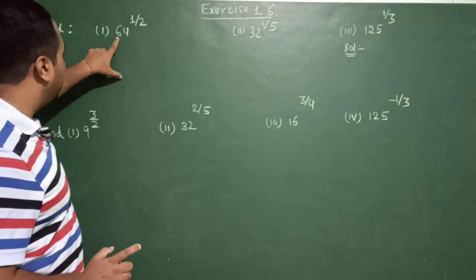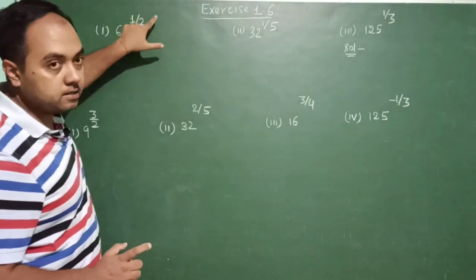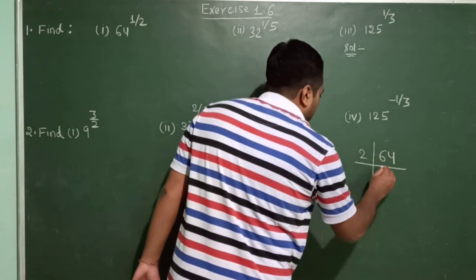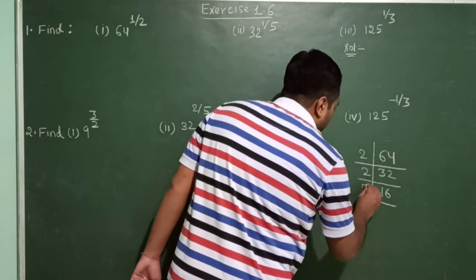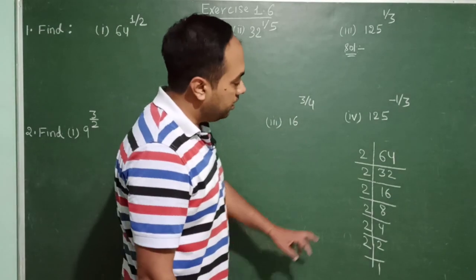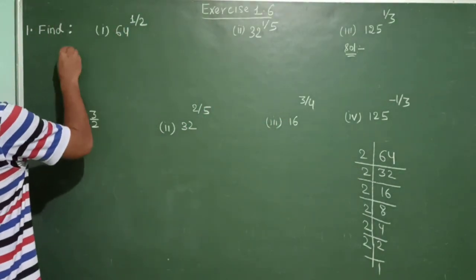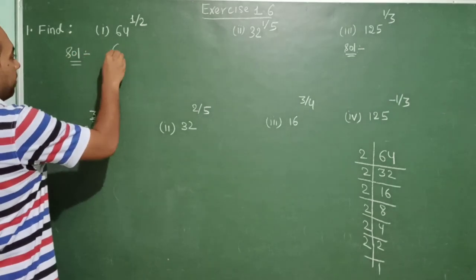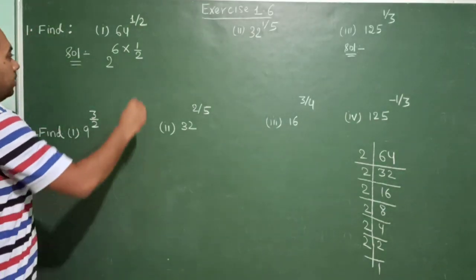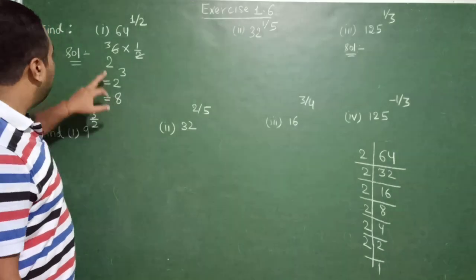To simplify 64 raised to the power 1 upon 2, we need to remove this 2, and for that we will first obtain the prime factors of 64. 2 twos are 2, 16, 2 eights, 2 fours, 2 twos, and 2 ones — so 2 is repeating itself 6 times. So 64 is written as 2 raised to the power 6, and outside it is 1 upon 2. Using the law of exponents, 2 multiplied by 1/2 gives 2 raised to the power 3, and 2 power 3 equals 8.